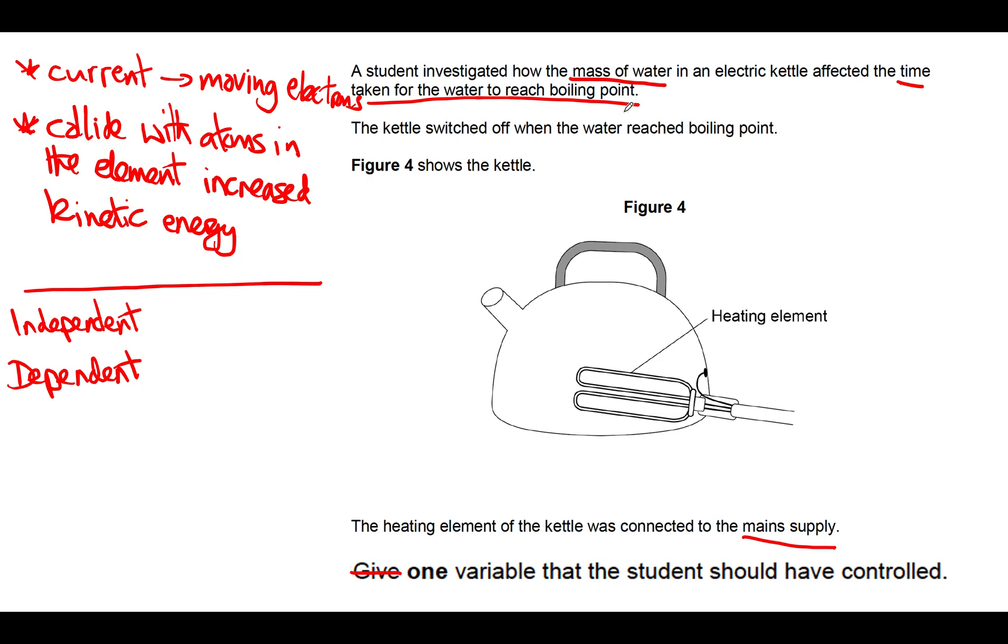In any experiment, to make sure that the results are reliable, we need to have control variables—those are all the things that we keep the same. In this case, we think, well, what might affect the time for the water to boil apart from the mass of water? You might be tempted to say something about using the same kettle every time—that's quite a weak answer. The best answer to give in this case is the starting temperature of the water. Obviously, if we're finding the time taken for the water to reach boiling point and it starts off warm, then it's going to take less time to heat up than if it starts off with cold water. So the control variable, the thing the student should have kept the same, is the starting temperature of the water.